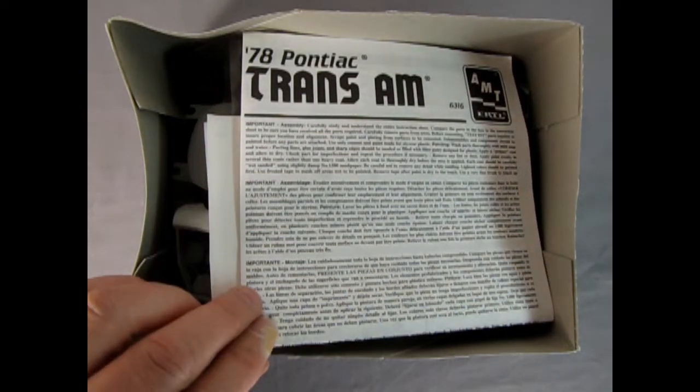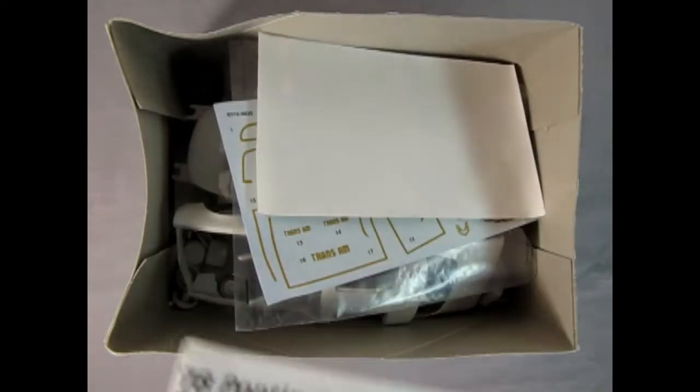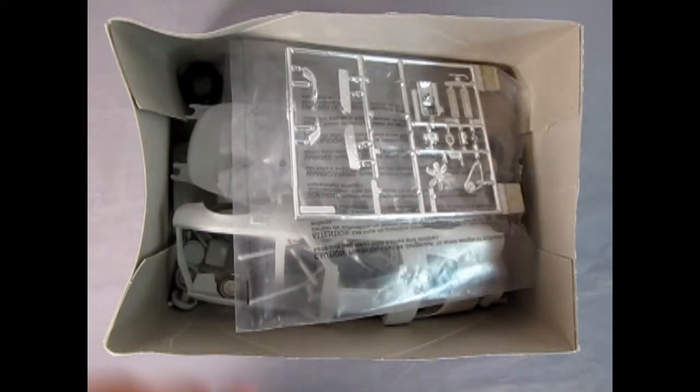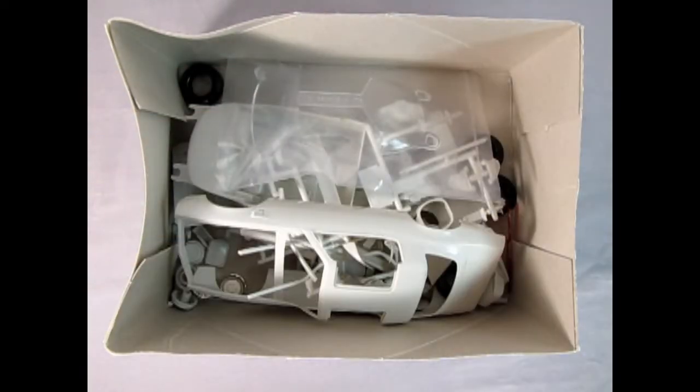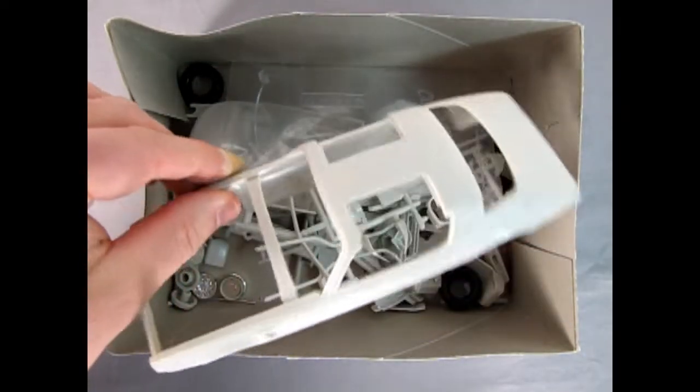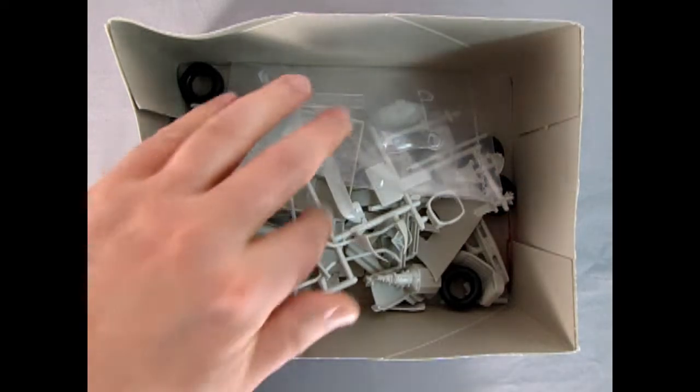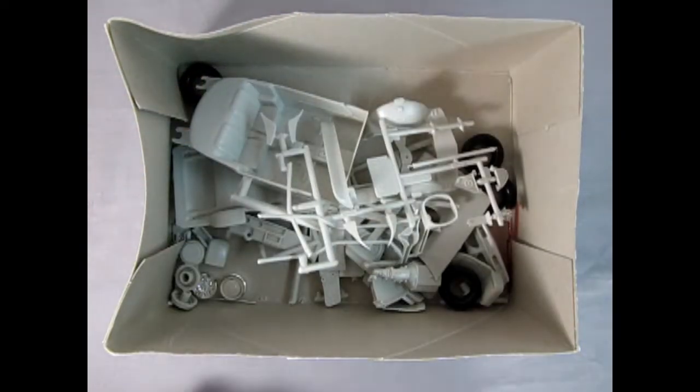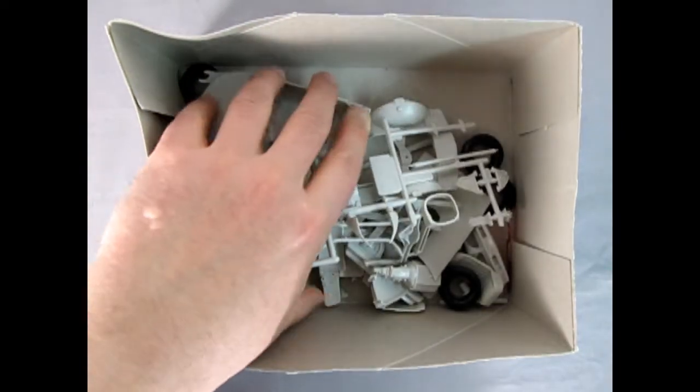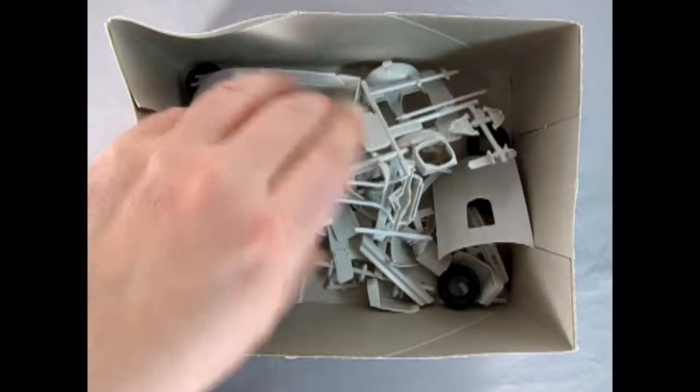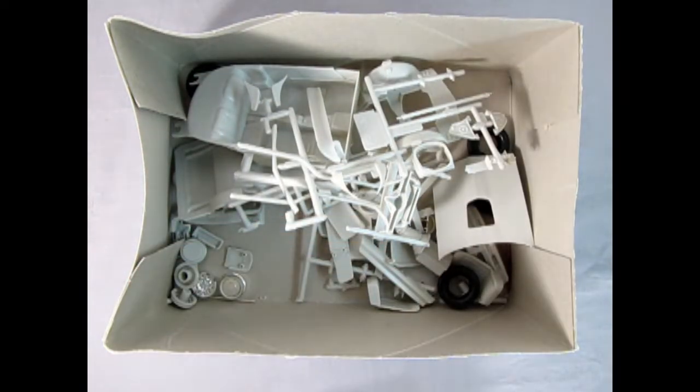Right away we get our nice Trans Am instruction sheet as well as the decals which we'll take a look at at the end of the video. Our chrome parts tree in a bag, now I do believe we were working on this model but there is the body and then our glass in a bag as well and then all the plastic components down here as well as the wheels and tires in the corner.